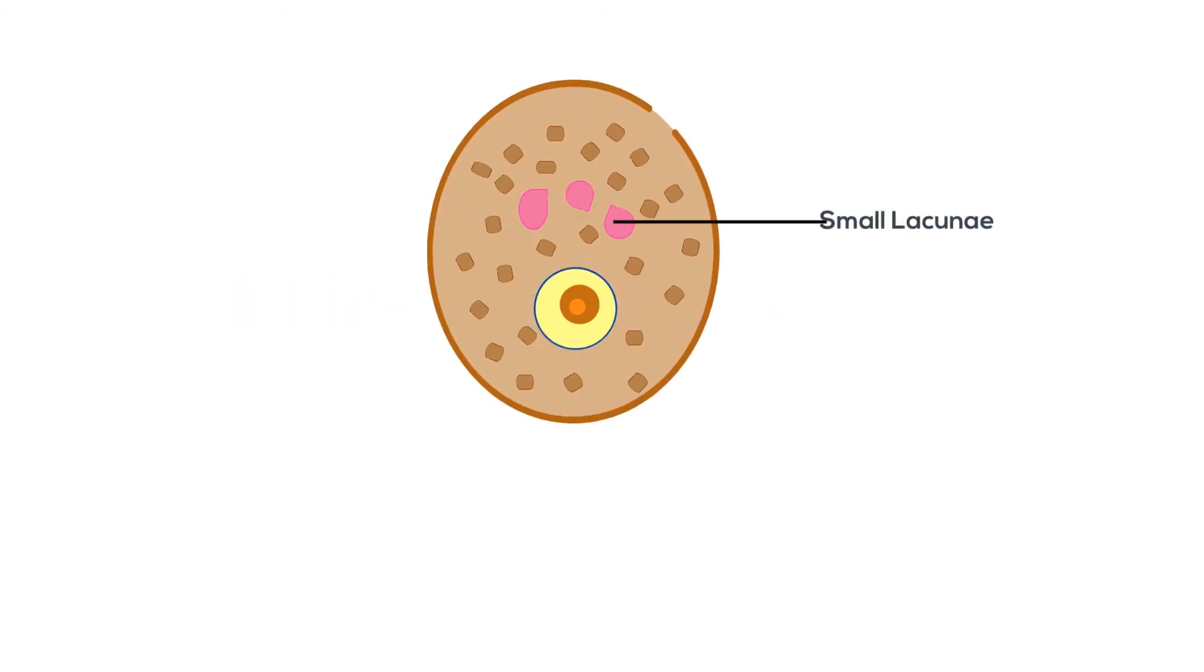Small fluid-filled cavities appear between the follicular cells called small lacunae. These cavities fuse together to form a large cavity, the antrum, and the follicle is termed secondary vesicular follicle.